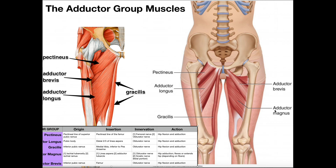A few things about some of the names — adductor longus, brevis, and magnus. Brevis is used to describe a muscle in a group that's the smallest or shortest, and if we actually look at the adductor brevis from its origin to its insertion, it is the shortest — it has the greatest brevity. Longus usually refers to the longest one, and the adductor longus is the longest muscle. Magnus normally refers to a muscle that's just plain big — it's pretty wide and extends pretty far down, so it's the biggest one by far and gets the name magnus.